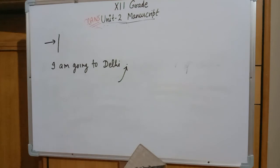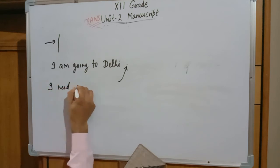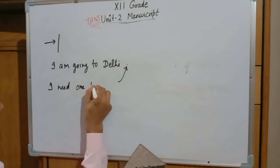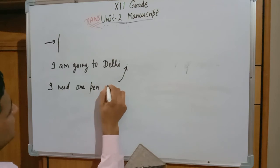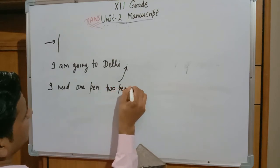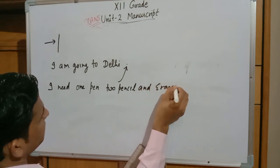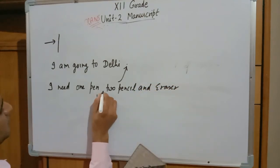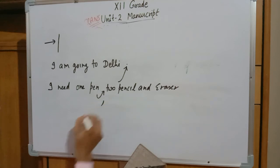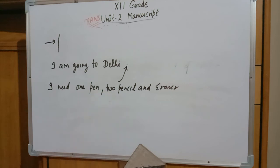The next sign is Insert Comma. For example, if I write a list — 'one pen, two pencil, and eraser' — and the comma between 'one pen' and 'two pencil' is missing, that is an error. The Insert Comma sign is used to indicate that a comma must be inserted at that position to make the statement grammatically correct.